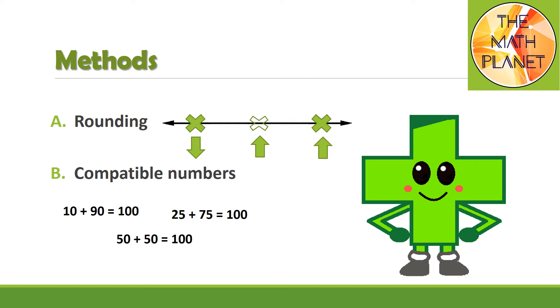Notice that when using rounding, the rounded numbers often end with 0 only, while compatible numbers do not necessarily end with 0.